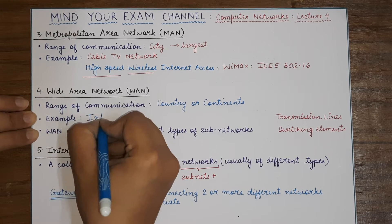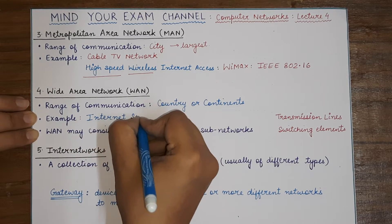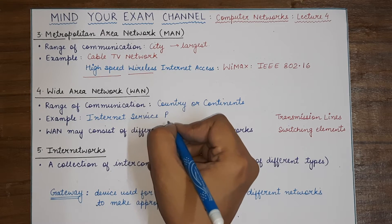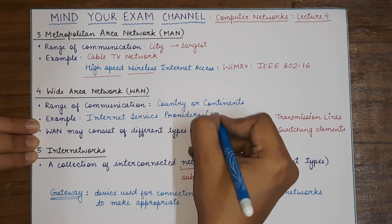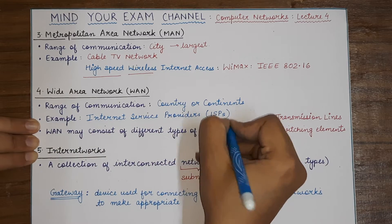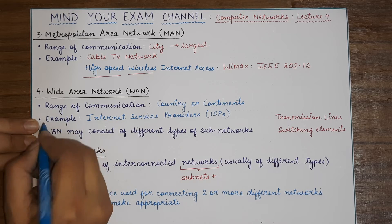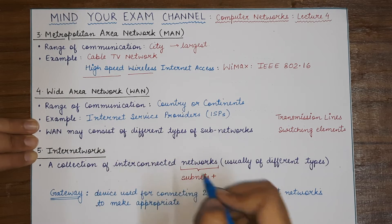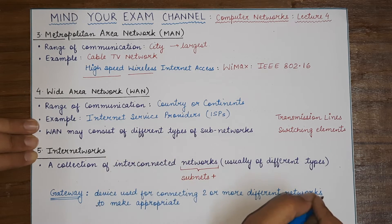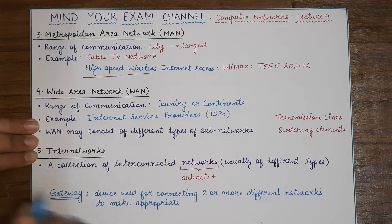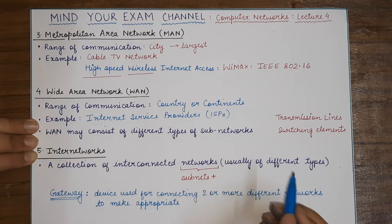Multiple cities in a country when connected together form a Wide Area Network. The most common example can be Internet Service Providers, because the offices of ISPs are spread across different parts of a single country or even across different continents. Another example is any multinational company with offices across different cities or countries — say a company XYZ has an office in India, Australia, and the US. If the company wants to connect all these offices, it will build a Wide Area Network.